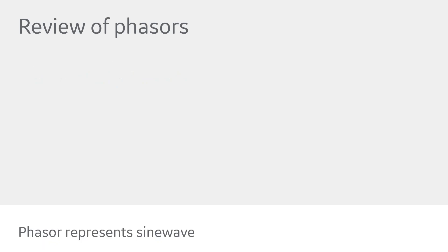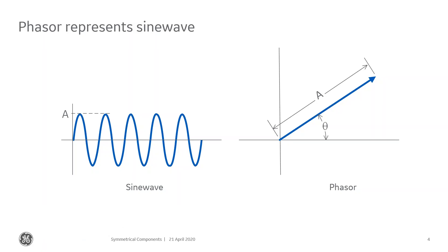So let's talk about what a phasor is. When I set an overcurrent relay — an overcurrent element in a microprocessor-based relay — I usually set a pickup value. In our relays, that's in per unit of CT. So if it's a 200:5 CT and I set that at one, that means it's picking up at 2000 amps. But what really is 2000 amps? I kind of think of that as the RMS quantity, but it could be the phasor.